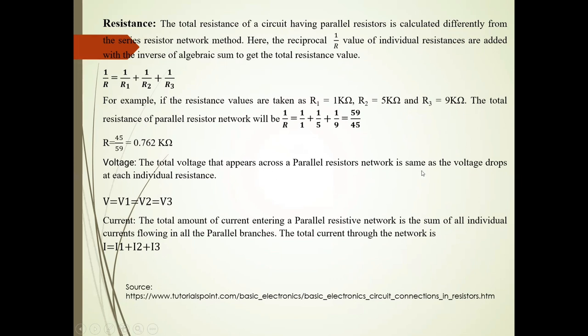Now voltage that appears across this parallel resistor network is same as voltage drop at each individual resistance. So, V equal to V1 equal to V2 equal to V3 and current is I is equal to I1 plus I2 plus I3.